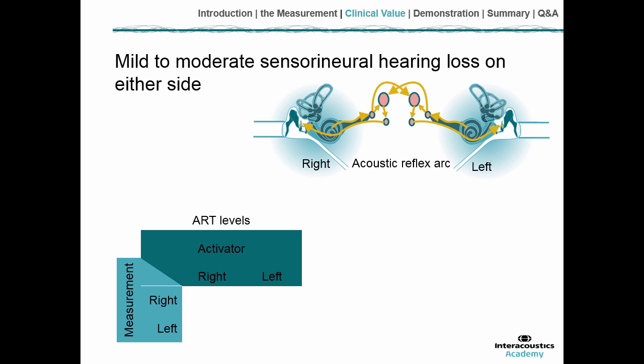The first situation to consider is a mild to moderate sensorineural hearing loss on either side. The activity going to the cochlear nucleus is a little bit less for soft sounds, but it is not less compared to normal for loud sounds. Because reflexes happen as a reaction to loud sounds, the reflexes are usually not affected by mild to moderate sensorineural hearing losses. In each box of our table, we can write normal reflex threshold.